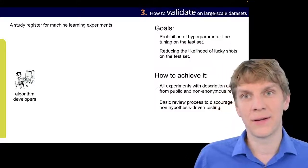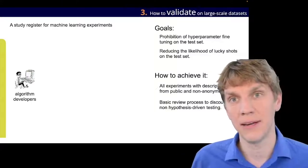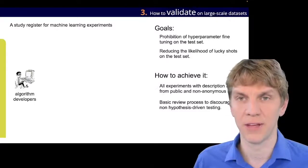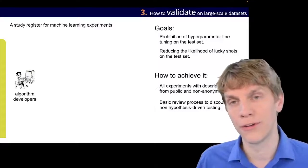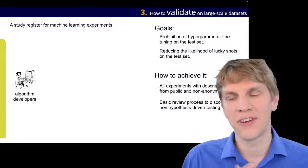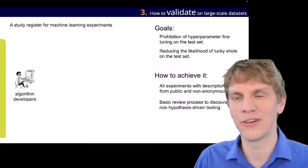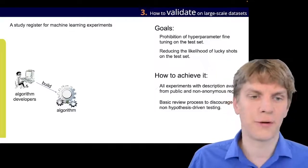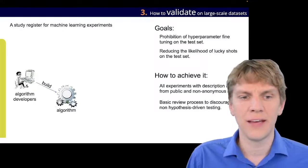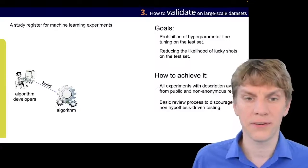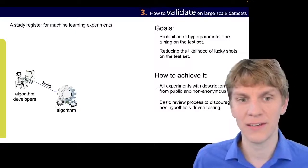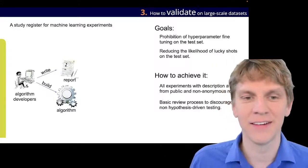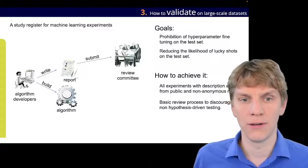Now, one thing that we propose and that we think could really help this in the biomedical sense is that we should aim together as a community for a study register for machine learning experiments. And the reason for that is that the more often you can run an experiment on the test set, the higher the chance of just doing a hyperparameter optimization on your test set, which is actually then, again, an overfit on your test set. So, the idea is as follows. Typically, our algorithm developers, they build a dataset, right? So, they construct an algorithm, but also, as in many biomedical challenges at least, they write some kind of report or paper about it. And this is, in this kind of idea, the precondition in order to run the algorithm on some kind of test set.